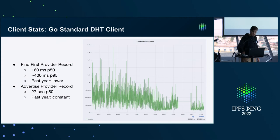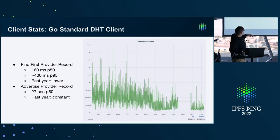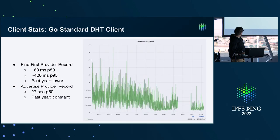This is a stat we monitor that shows the time it takes a random node in the network to look up some content. Over the past year we did some work on the Hydras, so it went down a lot. Currently, to look up a single record it's about 160 milliseconds, and it gets higher toward the tail. Advertising takes a long time because you have a lot of peers to send your records to, and we haven't done any performance optimizations on that. That's with the standard client.